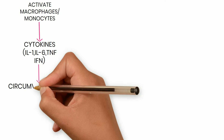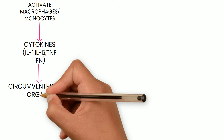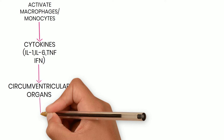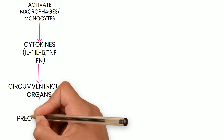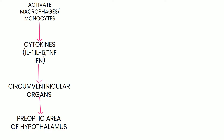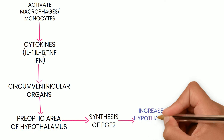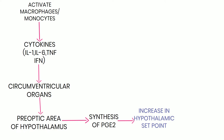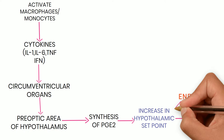These cytokines cannot easily penetrate the blood-brain barrier, so they act on circumventricular organs where the blood-brain barrier is incomplete. This in turn activates the pre-optic area of the hypothalamus, where prostaglandin E2 is synthesized. Prostaglandin E2 increases the hypothalamic set point, resulting in fever. Endotoxins from gram-negative organisms can directly act on the hypothalamus to increase the hypothalamic set point.